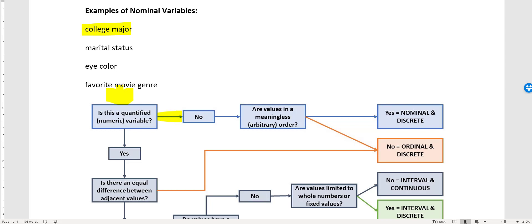Now we ask ourselves, are values in a meaningless or arbitrary order? If I was looking at the data, psychology, business, whatever, those different majors, could I put them in a meaningful order that's not subjective? As a psychologist, maybe I'll be like psychology is number one, but that's not meaningful. That's just my own bias. My answer to that question for college major, are values in a meaningless, arbitrary order? Yeah, they are. Hey, nominal and nominal variables are always discrete.